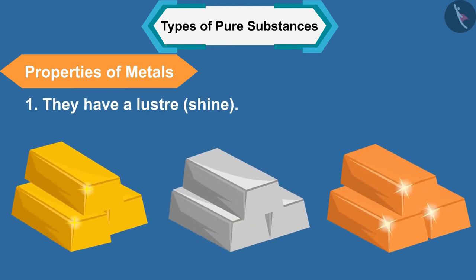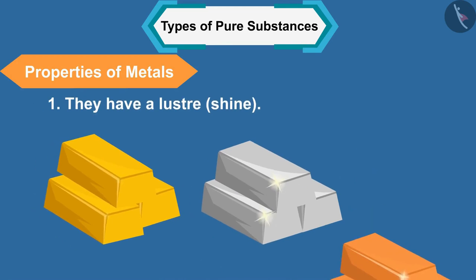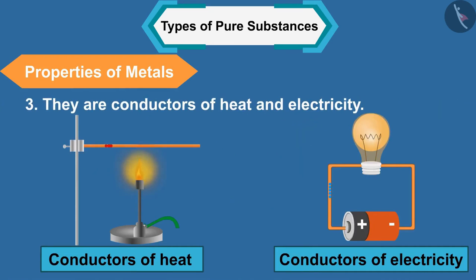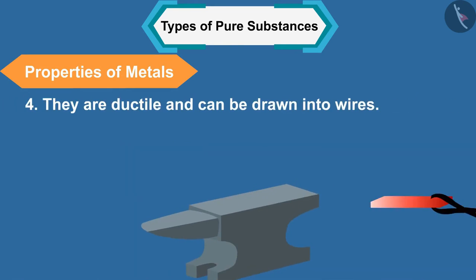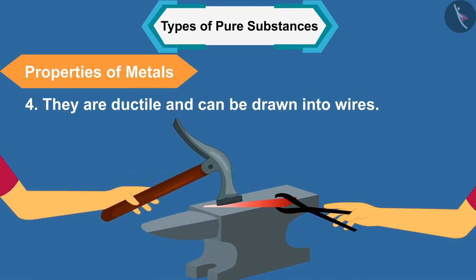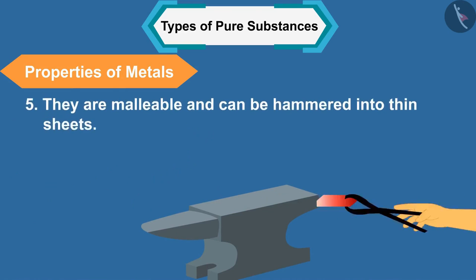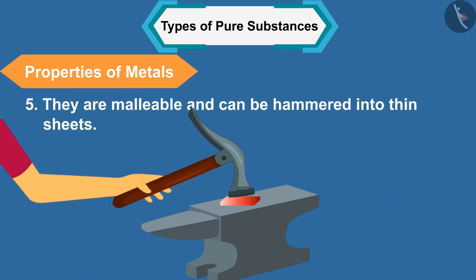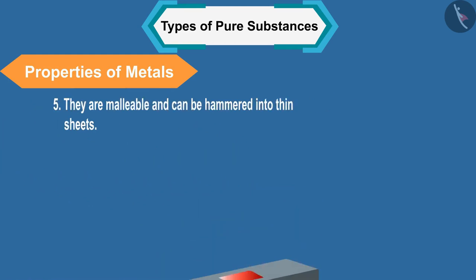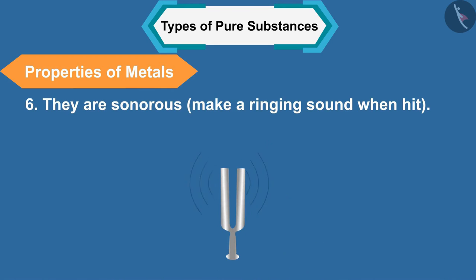Let us first learn about some properties of metals. One, they have a luster or shine. Two, their color is silvery gray or golden yellow. Three, they are conductors of heat and electricity. Four, they are ductile and can be drawn into wires.